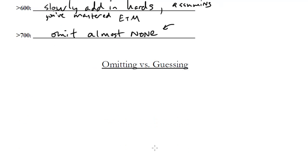Now how about omitting versus guessing? So now that you know how many questions to do, what's a good general omitting guideline? Well again, I'm kind of repeating a little bit what's been said already. But for less than a 600, you pretty much want to omit most, if not all, of the hards. If you're going for greater than a 600, you want to omit some of the hards. And if you're going for above a 700, omit almost no hards.